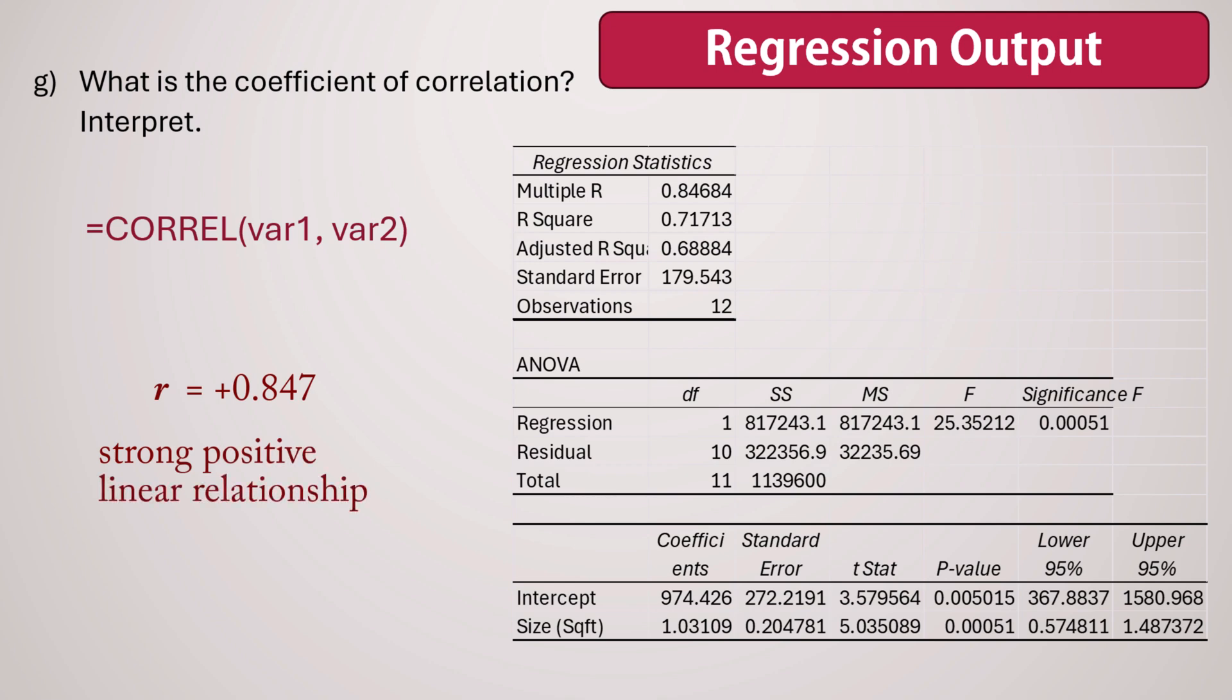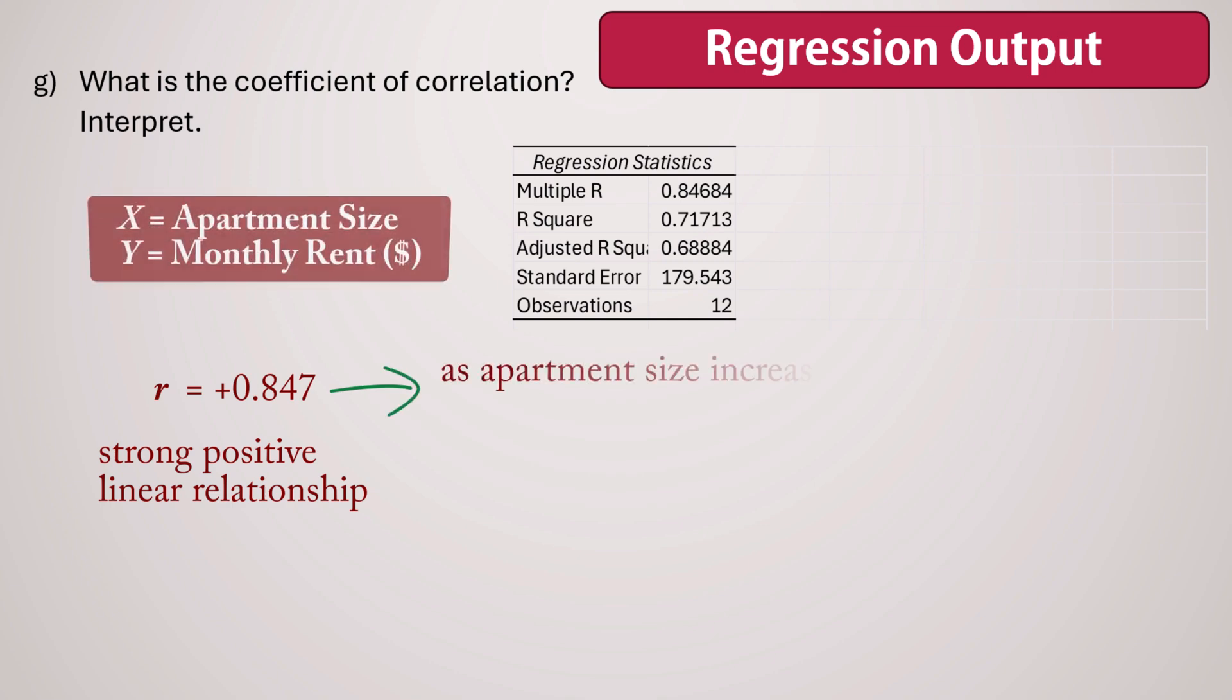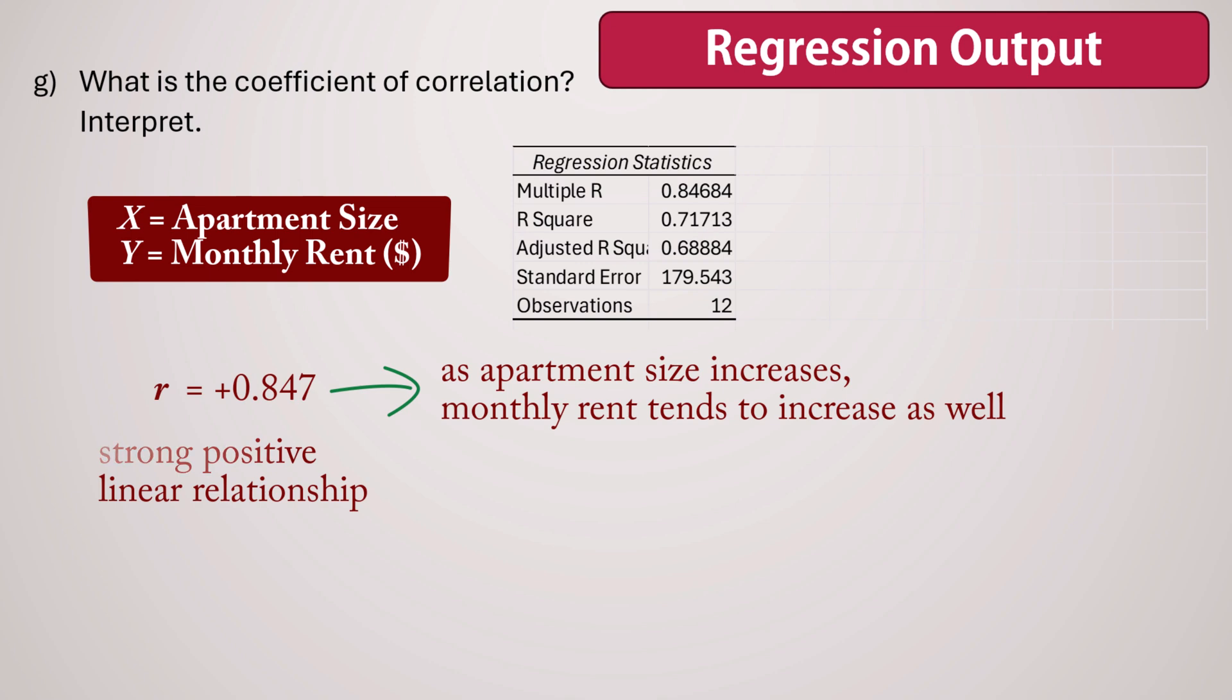This indicates a strong positive linear relationship between the two variables. In this context, a correlation of 0.847 suggests that as apartment size increases, monthly rents tend to increase as well. The closer R is to plus 1 or negative 1, the stronger the linear relationship between the two variables. With a value of 0.847 being close to 1, we can confidently say there is a strong correlation here.